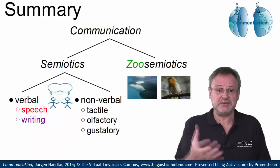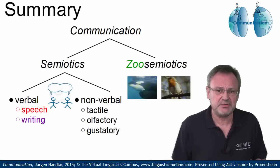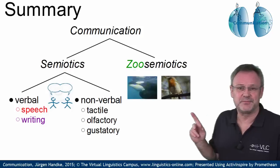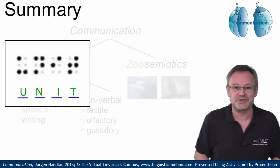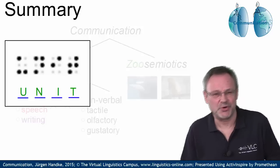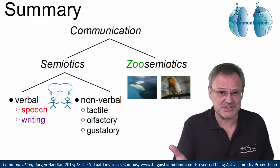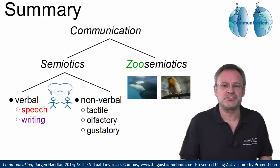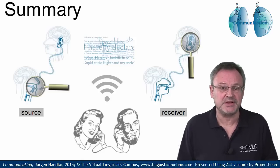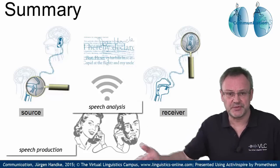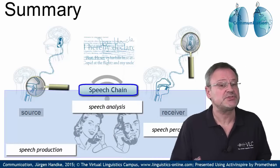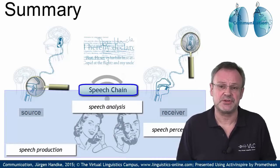So, in summary, animals and humans and even machines communicate. They use various ways of communication ranging from verbal to non-verbal. By the way, the solution to the short Braille task: the code stands for the characters U-N-I-T, which means, of course, 'unit.' Returning to the summary, language in a strict sense is confined to humans, and the most important mode of human language is speech. The study of speech is the goal of phonetics, which looks at three main events: the production of sounds, the analysis of the sound wave, and the perception of sounds. These three events taken together are referred to as the speech chain, a topic taken up in a separate e-lecture.